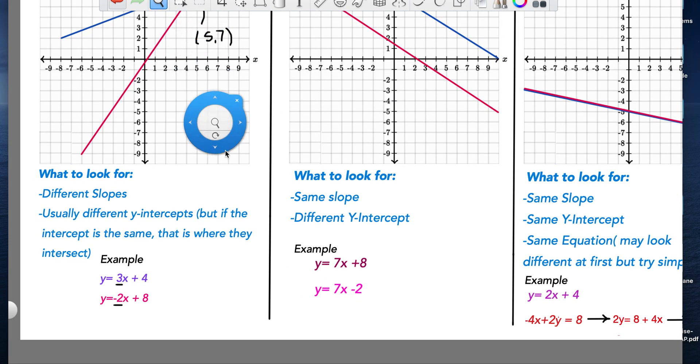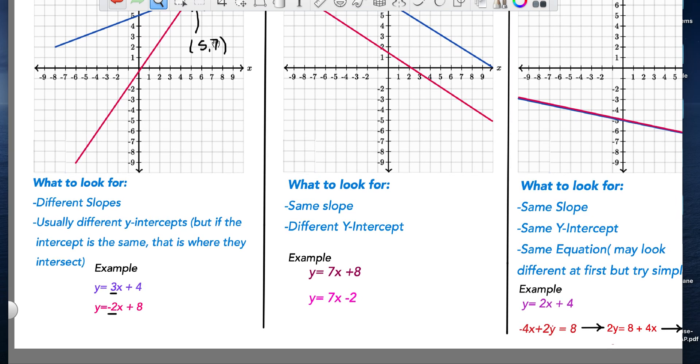So I have these cheat sheets down below that I want you guys to copy. And I'll include the link in the description. It says what to look for. So you want to look for different slopes, usually different y-intercepts. But if the y-intercept is the same, that's where they'll intersect. So here's an example I have. The purple equation I have is y equals 3x plus 4, y equals negative 2x plus 8. I don't need to go any further. I know that these things have different slopes. I can immediately tell that they're going to have one solution.